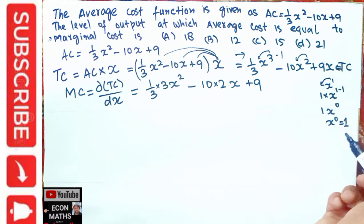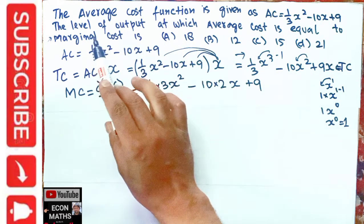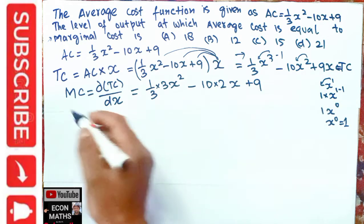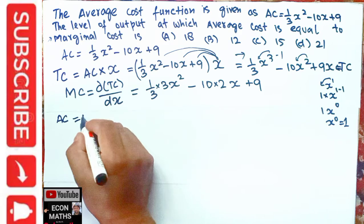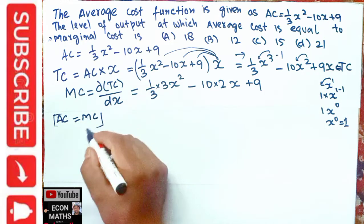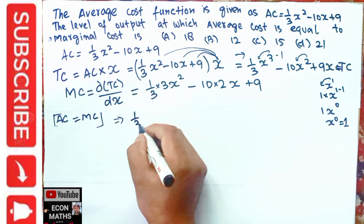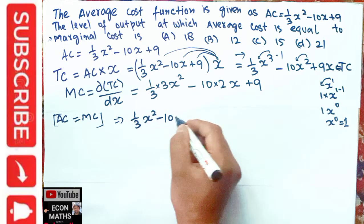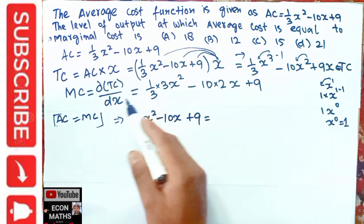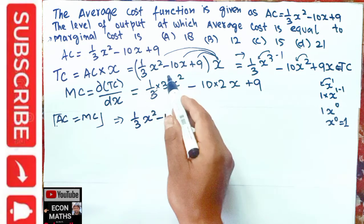Now the question asks for the level of output at which average cost equals marginal cost. So we equate average cost with marginal cost. Our average cost is (1/3)x² - 10x + 9, and we set it equal to the marginal cost x² - 20x + 9. The 9s cancel on both sides.